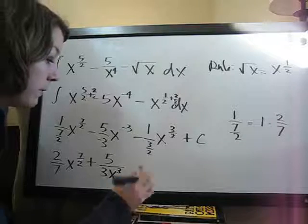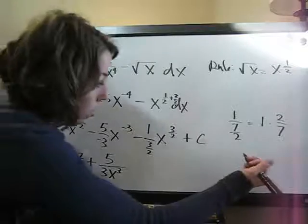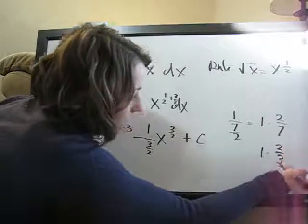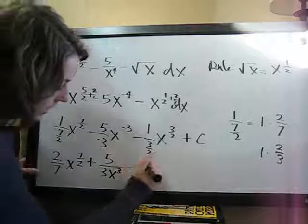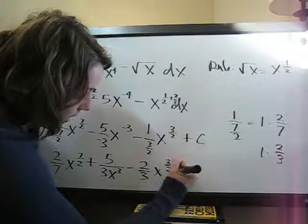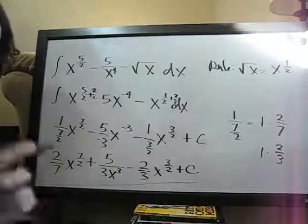And then, 1 over 3 halves, instead of 1 divided by 3 halves, we're going to do 1 times the inverse, 2 thirds, which of course is 2 thirds, so minus 2 thirds x to the 3 halves plus c, and that's our answer.